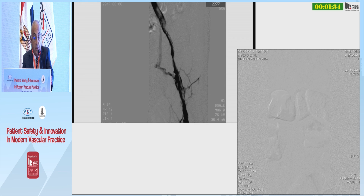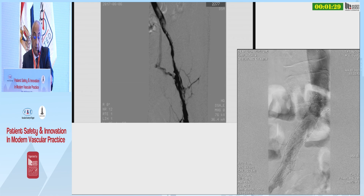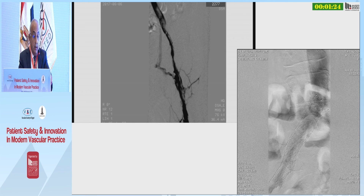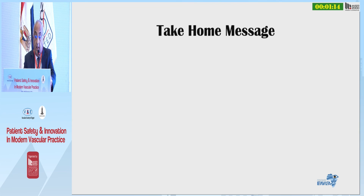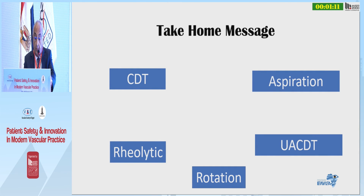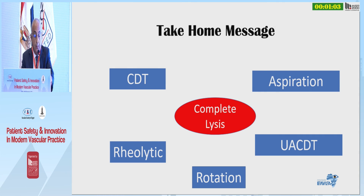This is the final result of a patient who had pharmacomechanical thrombolysis, and this is the final result of a patient who had catheter-directed thrombolysis. If you end up like the first one, you are sure to have early re-thrombosis or late re-stenosis. The difference is complete clot lysis. My take-home message is: whether catheter-directed thrombolysis or any mechanical method is used — or a combination of both — the most important goal is to achieve complete clot lysis. This is the key to an acceptable long-term result. Thank you.